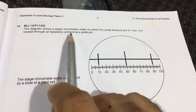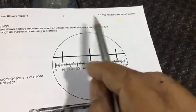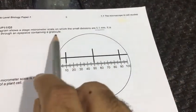In this question, the diagram shows a stage micrometer scale on which the small divisions are 0.1 mm. It is viewed through an eyepiece containing a graticule.